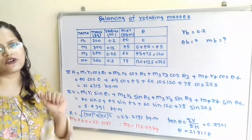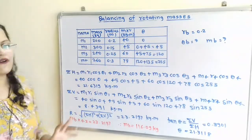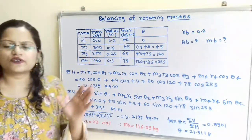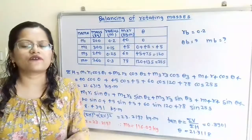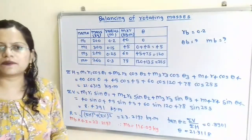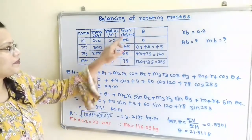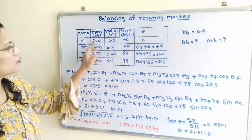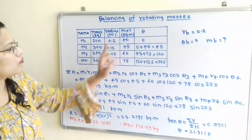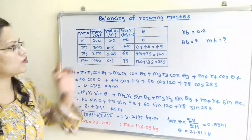Let us prepare a table with the help of the given data. The first column is for the name — four masses M1, M2, M3, M4. The second column is for mass in kilograms. The third column is for radius of rotation in meters. The next column is for M×R in kilogram-meters, calculated by multiplying the two columns: 200×0.2=40, 300×0.15=45, 240×0.25=60, and so on.